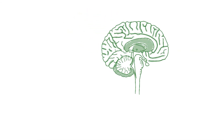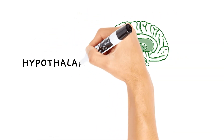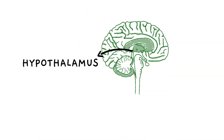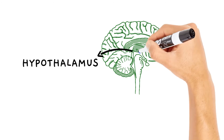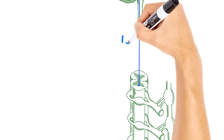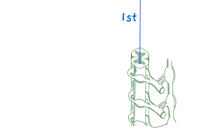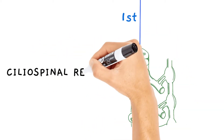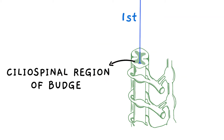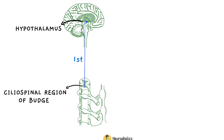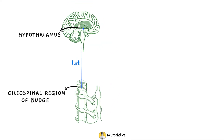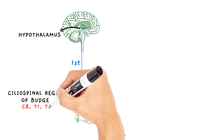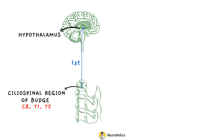First-order neurons originate in the posterolateral hypothalamus and descend uncrossed in the dorsolateral brainstem and intermediolateral cell column of the spinal cord to the upper thoracic cord, also called the ciliospinal center of Budge. This center is found in the intermediolateral cell column of C8, T1, and T2.